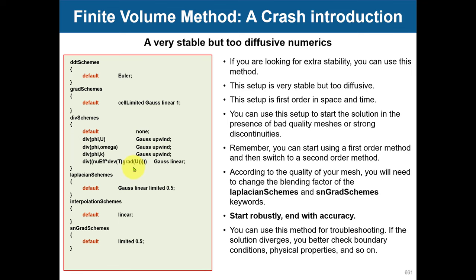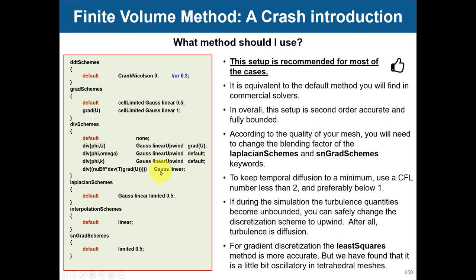This recommended setup is also the default in commercial CFD software like Star-CCM+ or Fluent — if you look at their default methods you will see the same approach proposed. These are your best standard practices. Now that you have this knowledge, go back to Module 1 or any previous tutorial and look at the dictionaries — you'll see we're always using second order accurate solutions. This has been a crash introduction to the Finite Volume Method and fvSchemes; hopefully you now have a good idea of what is happening.